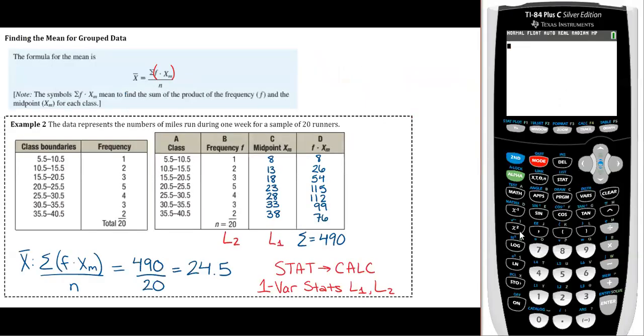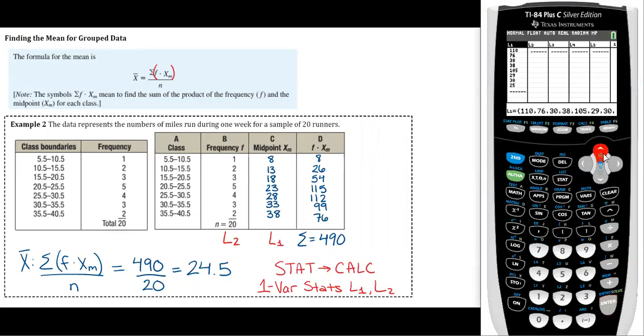This one where we found the mean for grouped data, if you're going to do it completely in the calculator, you still have to go through and find all your midpoints on your own. So you still have to do column C. You do not have to do column D. Your calculator will kind of do that for you. So what you want to do is go to stat, edit, and then if you want to clear a list quickly, go up and highlight the name of it and just click clear and then enter.